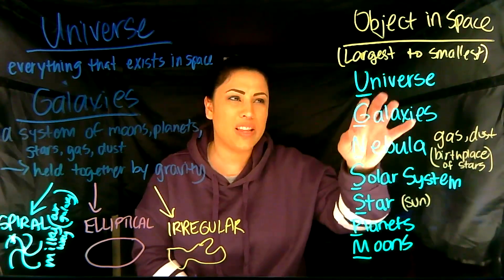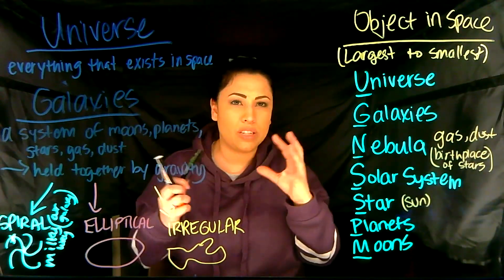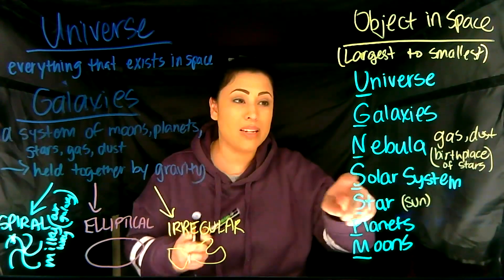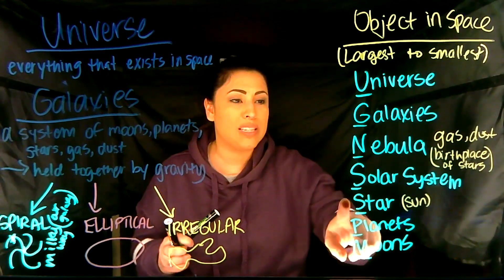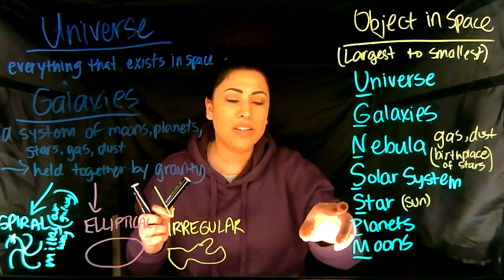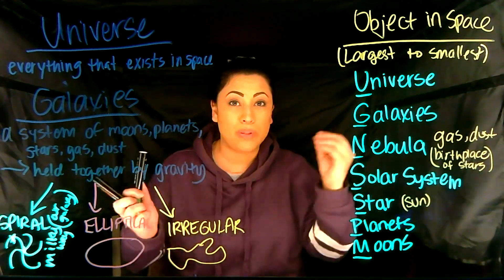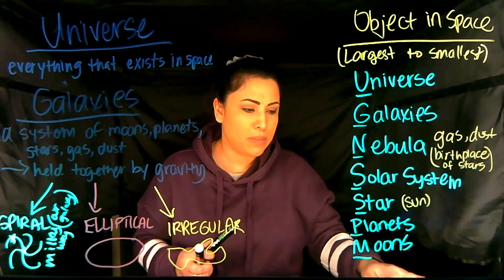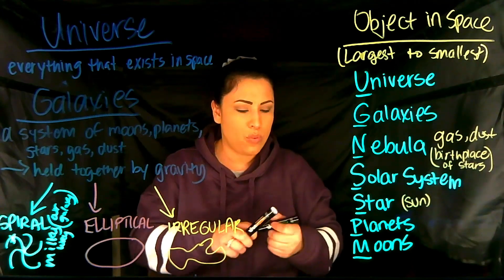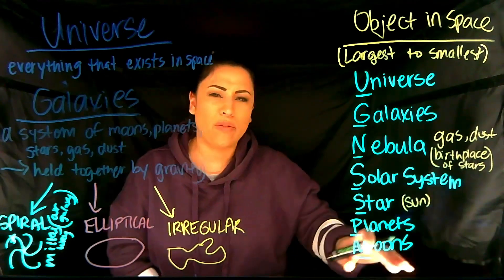So now we can picture and visualize: we have a universe, then galaxies, then nebulas which are the birthplace of stars — that's how stars get made. Stars typically form a solar system around them with all the planets, and our star is the Sun. Then we have the planets and the moons, like the moon we see around Earth.